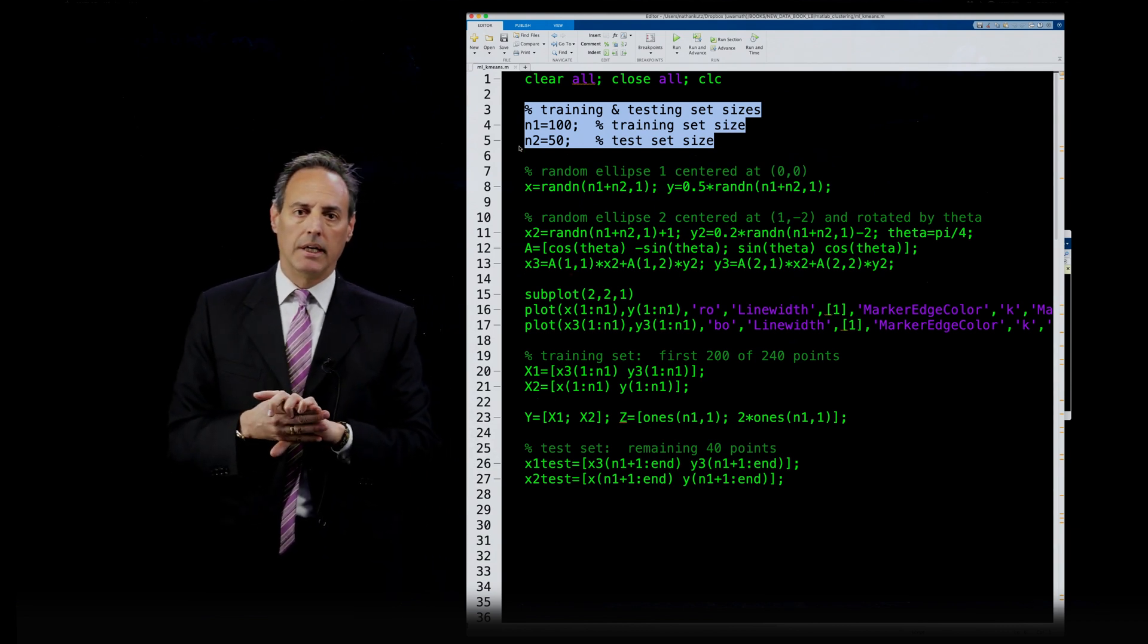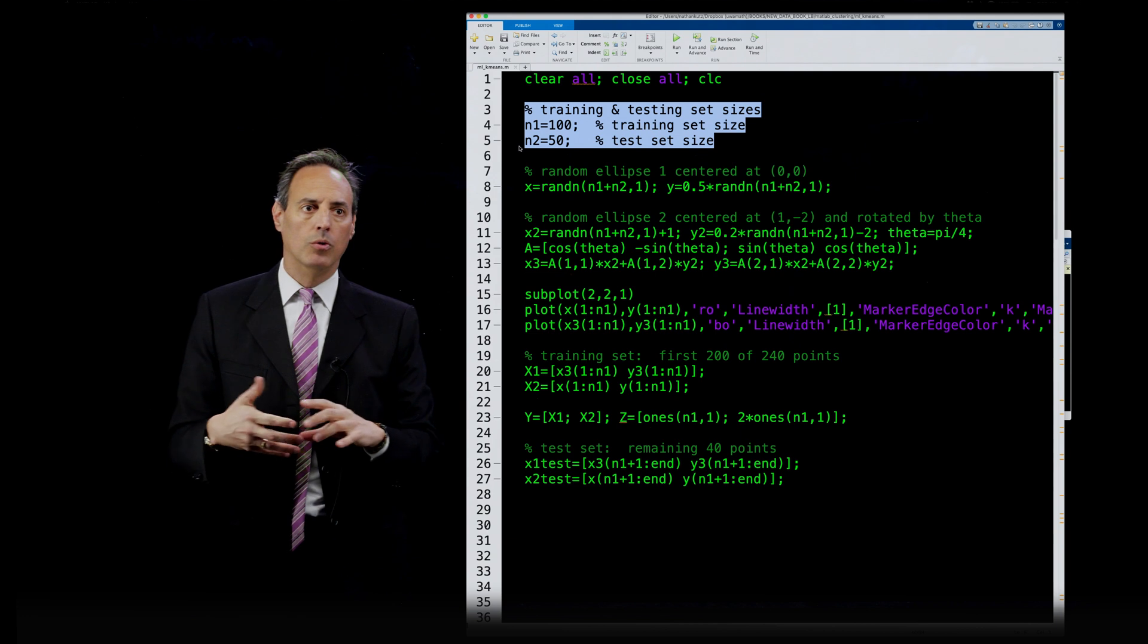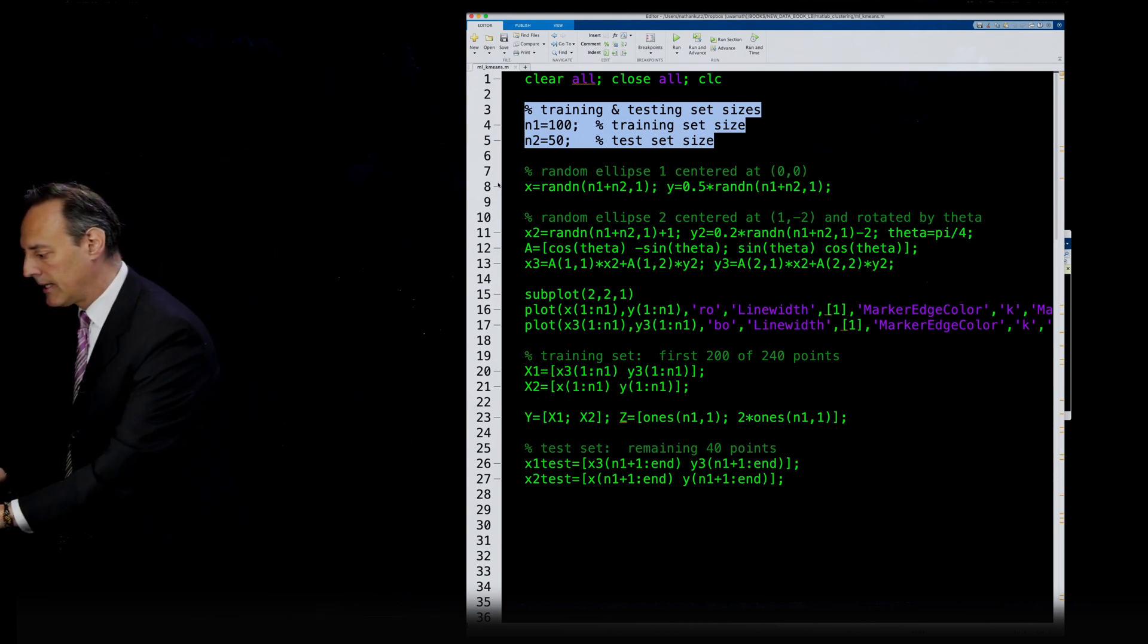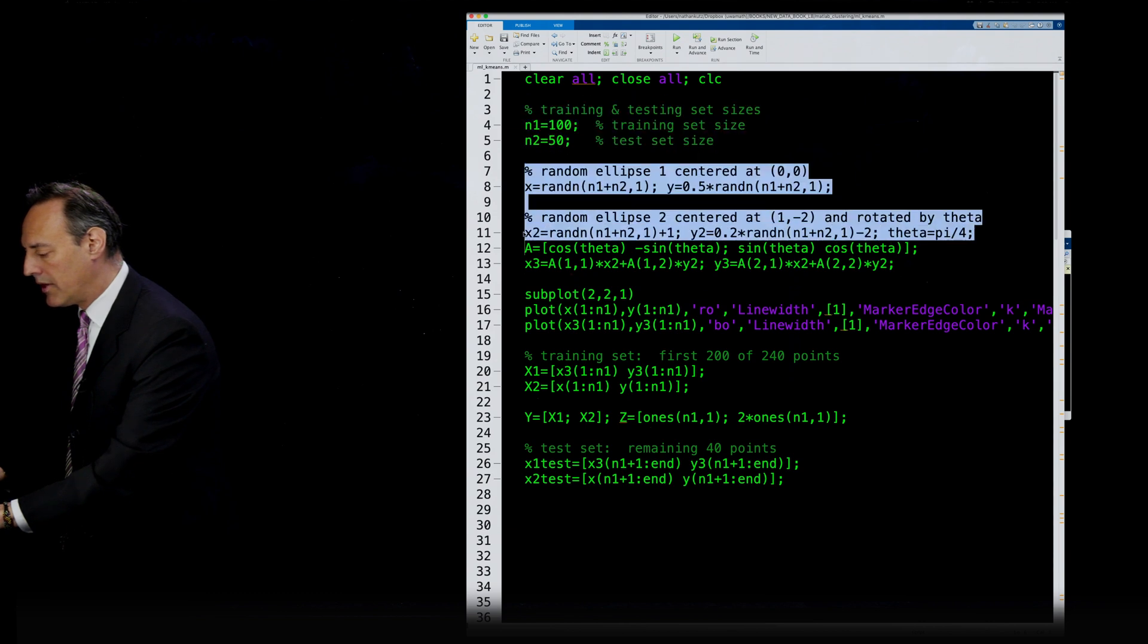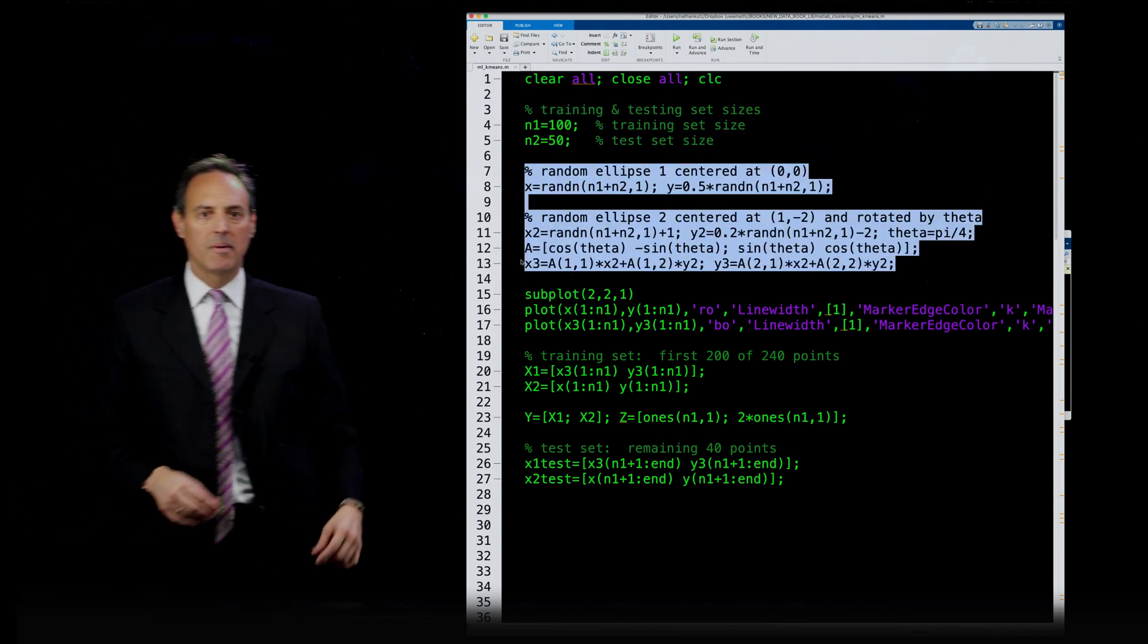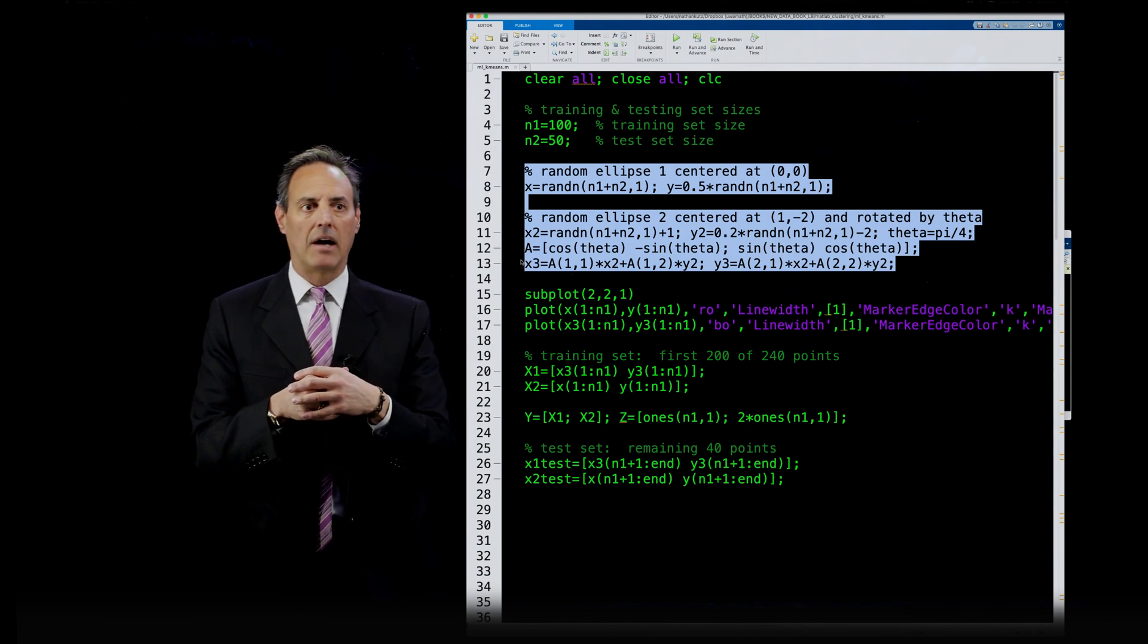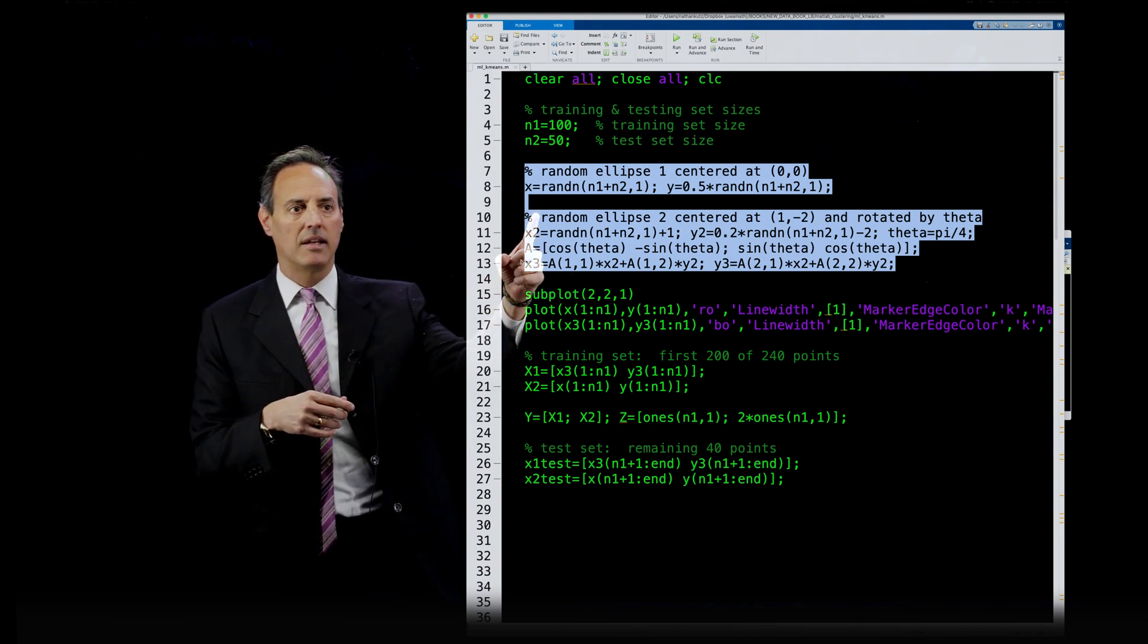So first what I'm going to do is making a training set and a test set. My training set will have 100 points. My test set will have 50. So the goal here is to create, I'm going to create two random distributions.